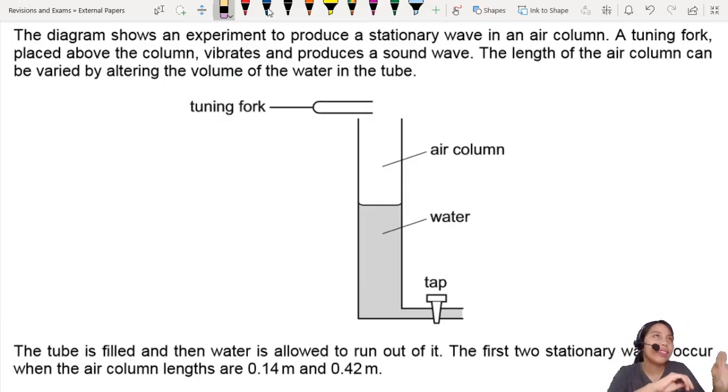If the length matches the wavelength of the tuning fork, you have a very nice sound. You are changing the length of the air column basically by letting water out of the tube. If I draw this tap here, you're just letting water out. The water level will go down.